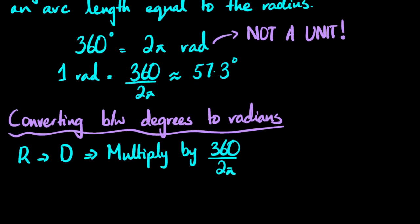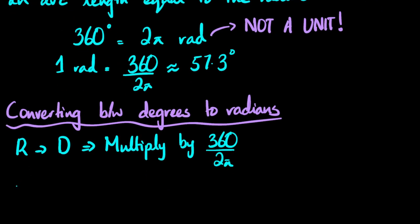And when you go from degrees to radians, you multiply by 2π upon 360.